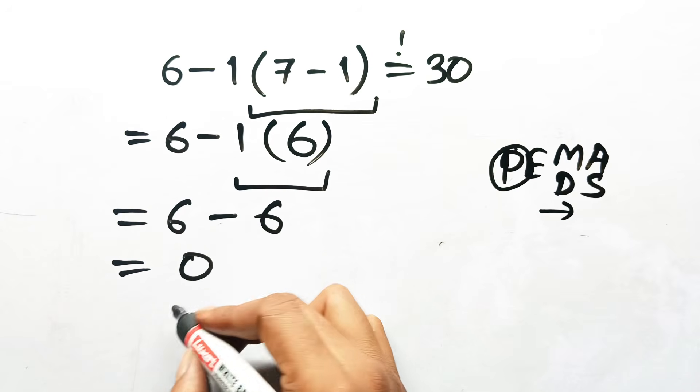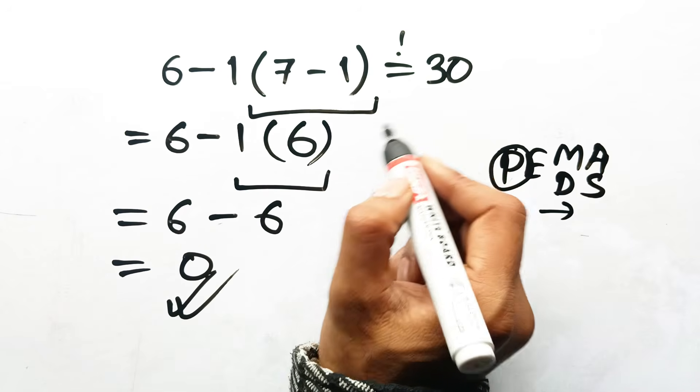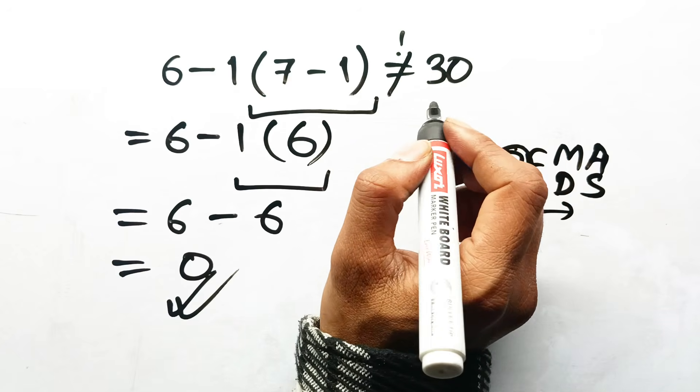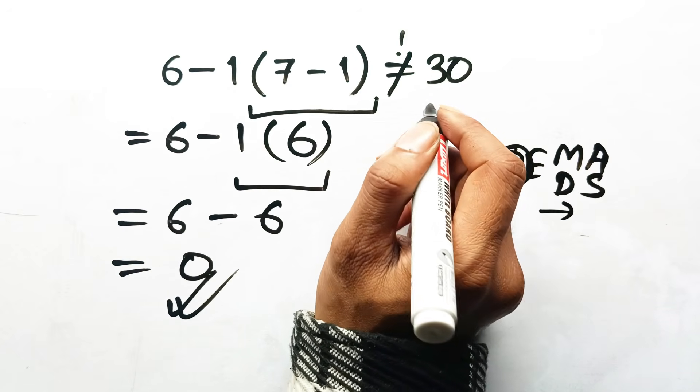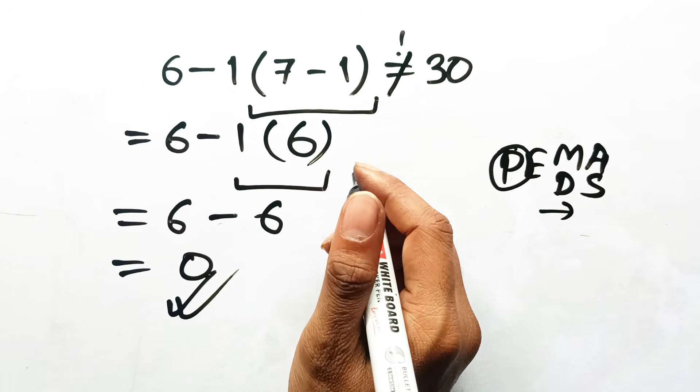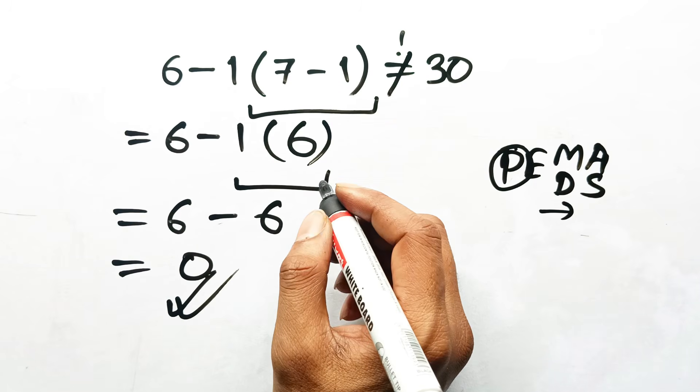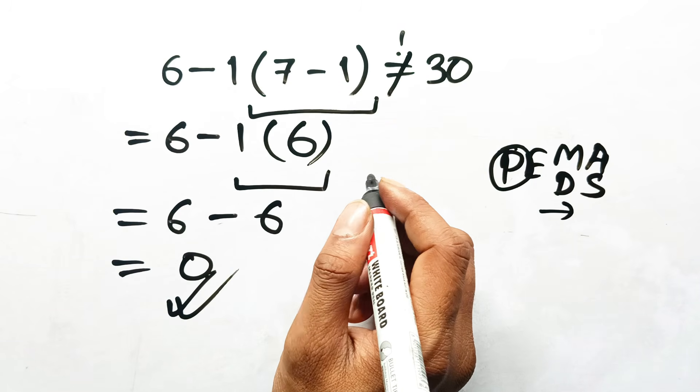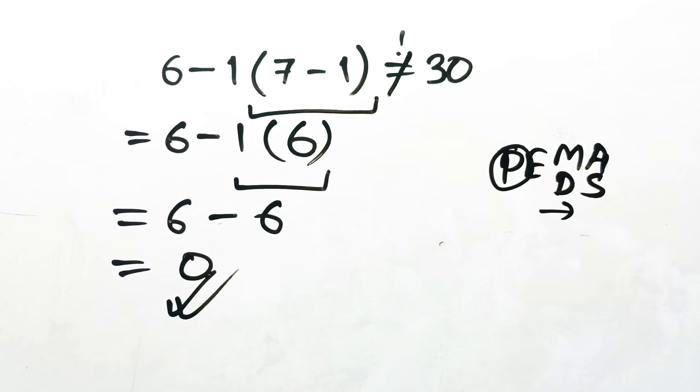So the correct answer is 0, not 30. See what happened? That obvious shortcut of subtracting first completely ignored the rule that multiplication takes priority over subtraction. It's a sneaky little trap that catches even the most confident math brains. If you spotted something I missed, share it in the comments.